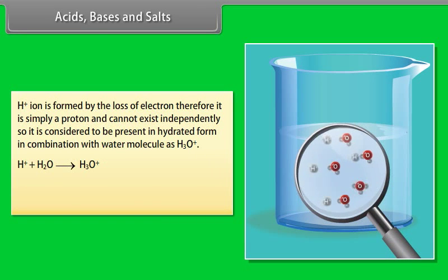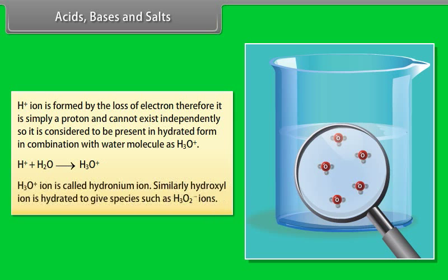H⁺ ion is formed by the loss of an electron; therefore it is simply a proton and cannot exist independently. It is considered to be present in hydrated form in combination with a water molecule as H₃O⁺. H₃O⁺ is called the hydronium ion. Similarly, the hydroxyl ion is hydrated to give species such as H₃O₂⁻ ions.